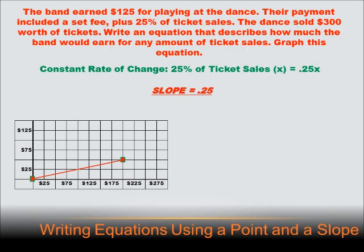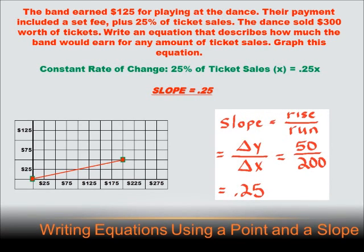So we can calculate the slope, but we need to remember that the constant rate of change described in the problem will be the slope. The slope equals the rise over the run or the change in y divided by the change in x. And in this case, it equals a rise of $50 divided by a run of $200 or .25.